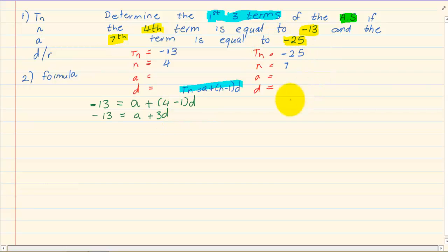Now let's do the same with the next information we have. We have minus 25 is equal to, remember we are substituting into the standard formula. So we have minus 25 is equal to A plus 7 minus 1 times D. Now we have minus 25, A plus 6D.